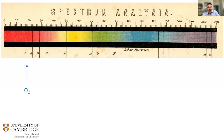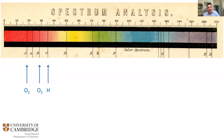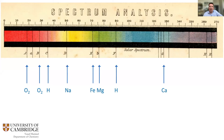It was eventually worked out what each black line corresponds to: the A line is oxygen in Earth's atmosphere; the B line is similar; the C line is due to atomic hydrogen in the sun's atmosphere; the D line was instantly recognized by Bunsen and Kirchhoff as due to sodium atoms in the atmosphere around the sun, absorbing just the right frequency.